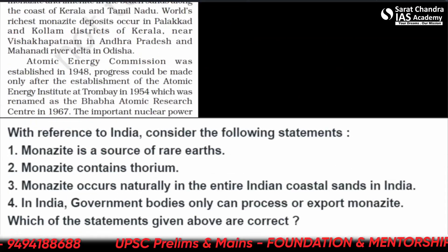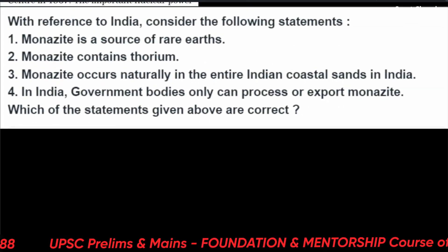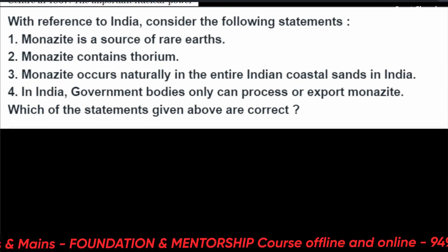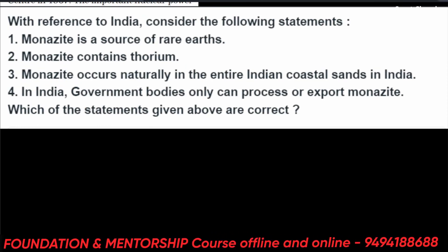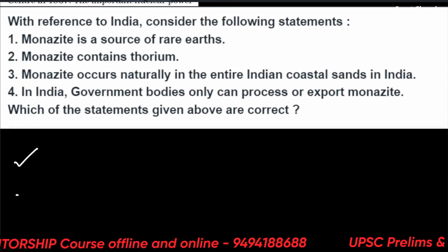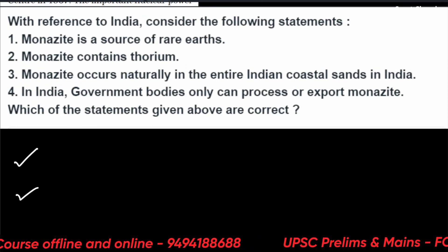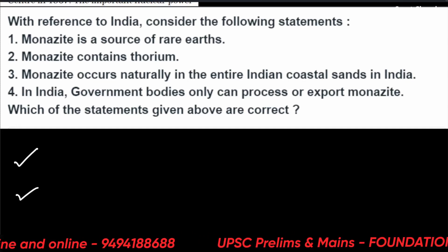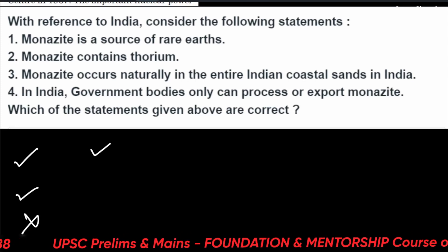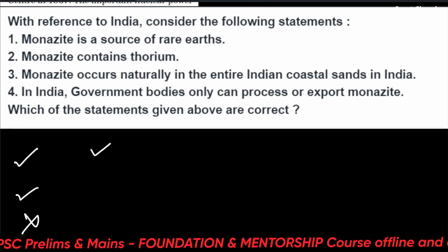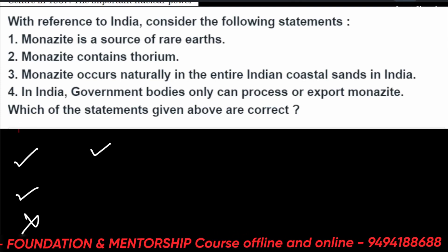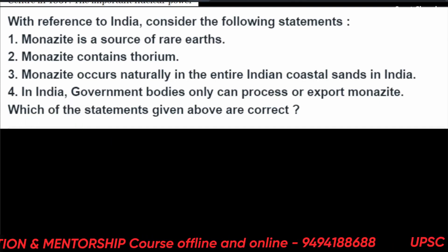Let us now solve the Prelims 2022 question on monazite. Statement 1: Monazite is a source of rare earths — True. Statement 2: Monazite contains thorium — True. Statement 3: Monazite occurs naturally in the entire Indian coastal sand — Wrong, it is not found along the entire coast. Statement 4: In India, only government bodies can process or export monazite — True. So the correct answer includes statements 1, 2, and 4.